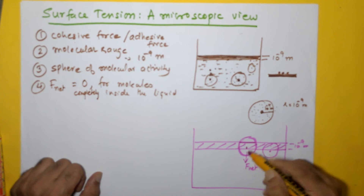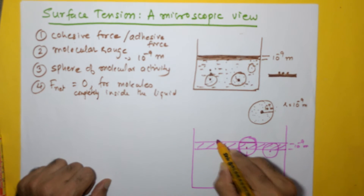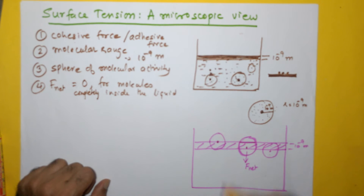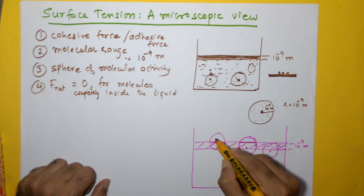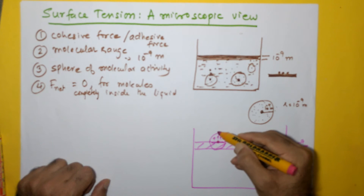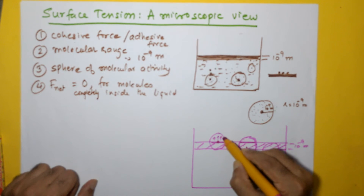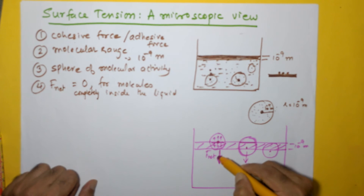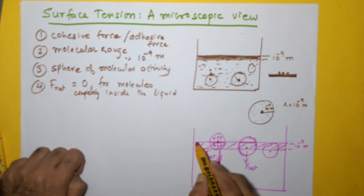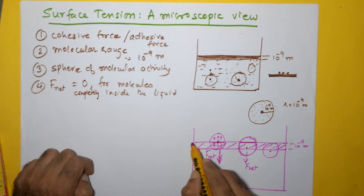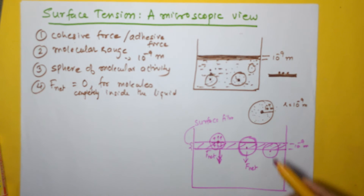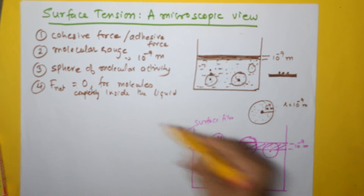This net downward force increases as we go up through the film. If I take a molecule exactly on the surface of the liquid, for this molecule there is practically no cohesive force acting in the upward direction — there are no water molecules above it, only air. Therefore, the upward force is zero and there is only a downward cohesive force, which is even larger. So all the molecules in the surface film have a net downward cohesive force acting on them.